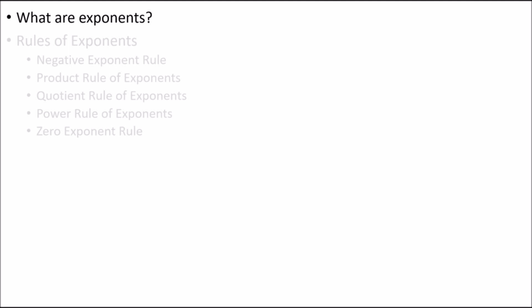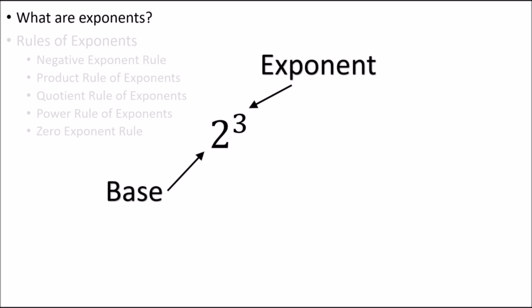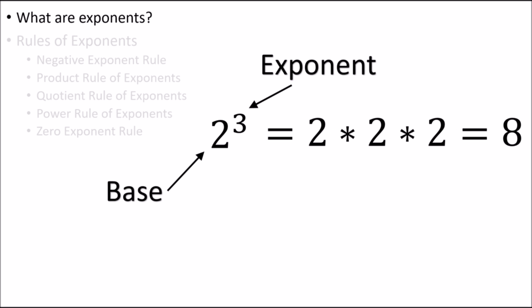I'm sure we've all heard of exponents before, but what exactly are they? Terms with exponents in them are called exponential terms. They will have a base and an exponent associated with them. The exponential term here is read as 2 to the third power or 2 raised to the power of 3. Exponents are just a shorthand way of telling someone that we want to multiply the base by itself a certain number of times. The exponential term shown here tells us that we want to multiply the number 2 by itself three times, giving us 2 times 2 times 2, which is equal to 8.